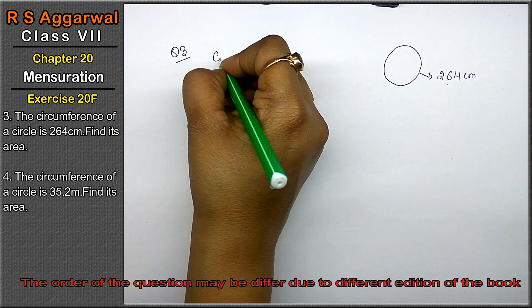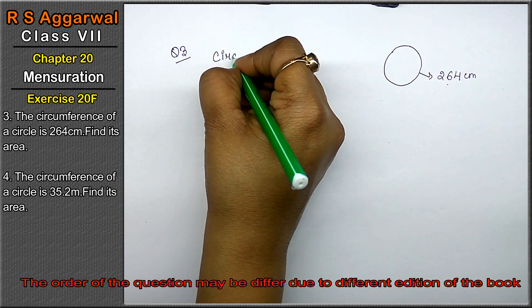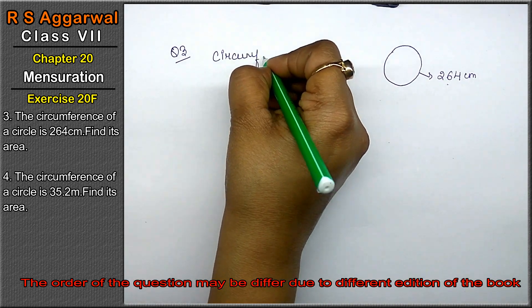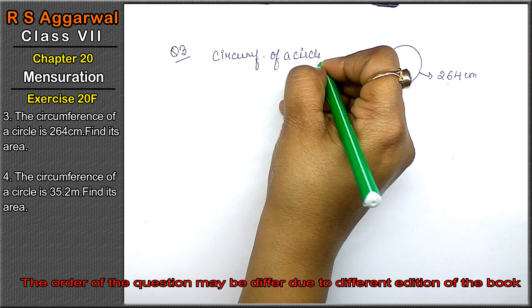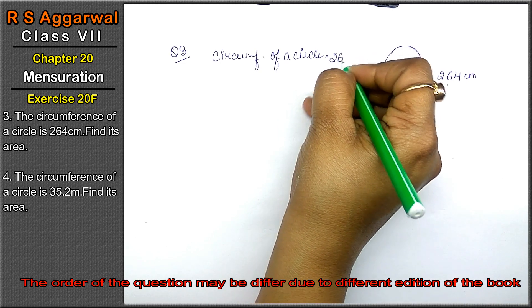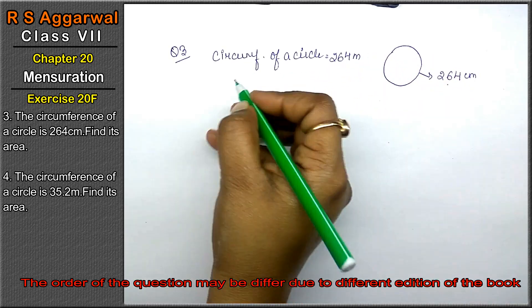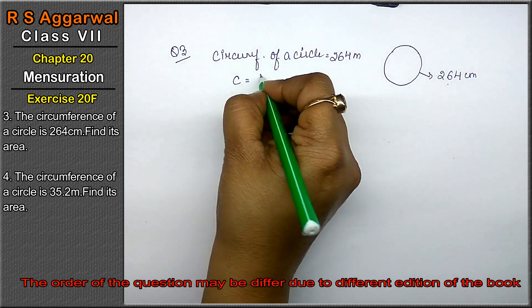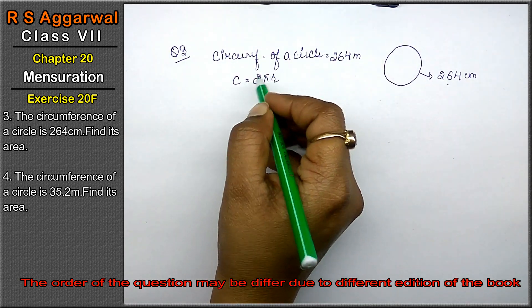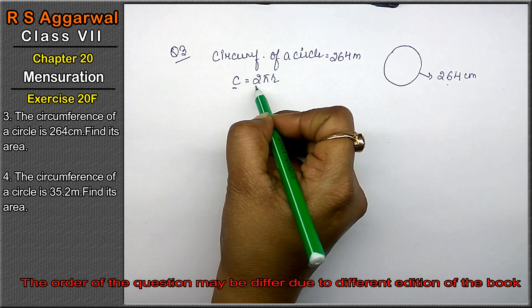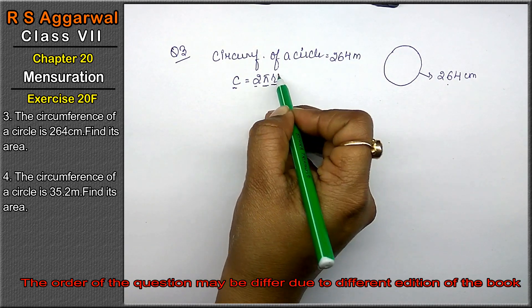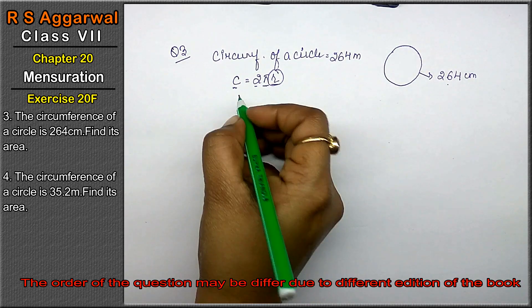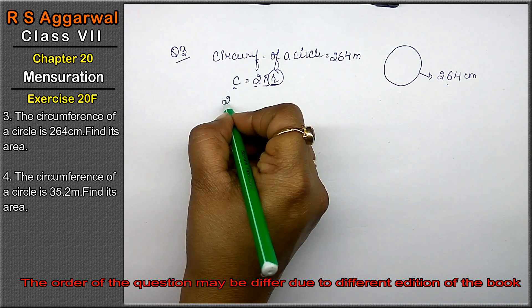Now circumference of a circle is given to us 264 meter. Circumference ka formula hota hai 2 pi r. Now circumference pata hai, pi ki value hamein pata hai. Toh isse hamein kya pata chal jayega? Radius pata chal jayega. Right friends?